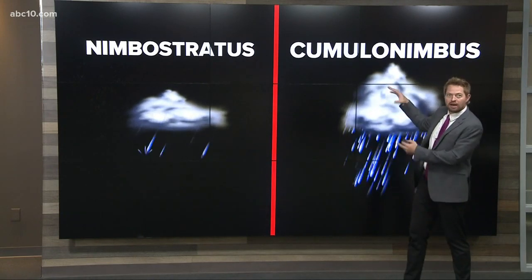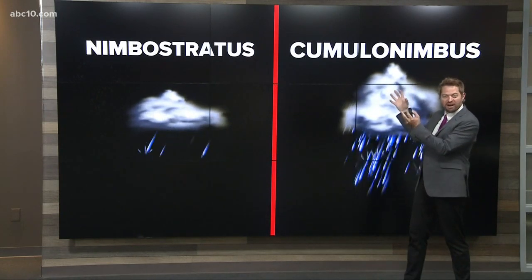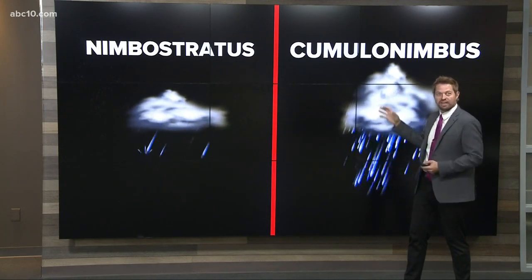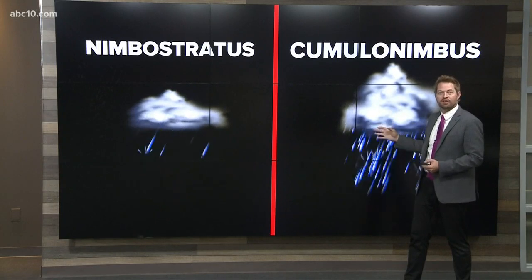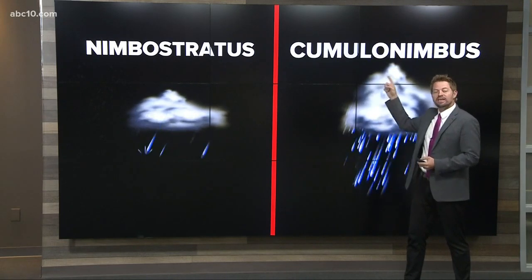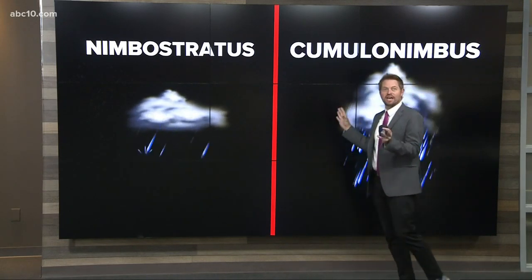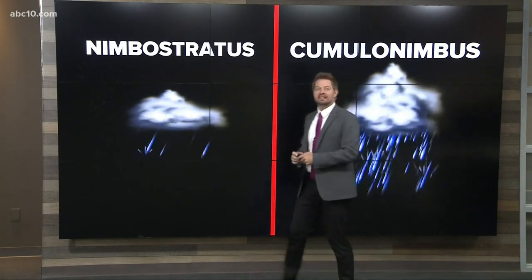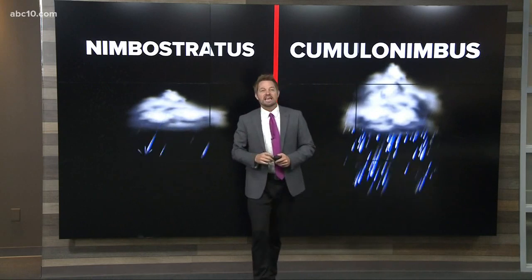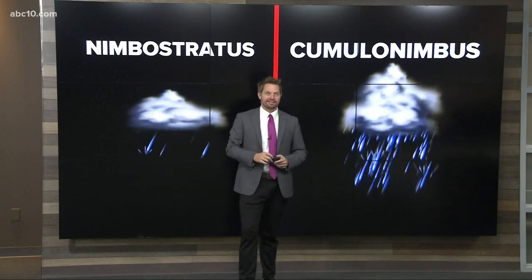Cumulonimbus is a tall cloud with big white puffy corners. That's the way you can tell — just by looking at the name, even though they're strange, you can tell exactly what cloud is producing that rain.